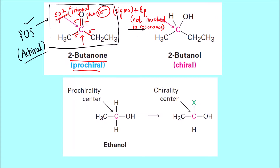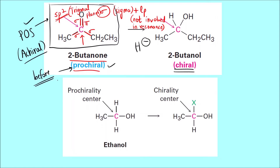But when we add another group — H minus — to this compound, we get a chiral center. That is why this center, which was achiral, becomes chiral in a single step of an organic reaction. 'Pro' means before, so before becoming chiral, this center is called prochiral.